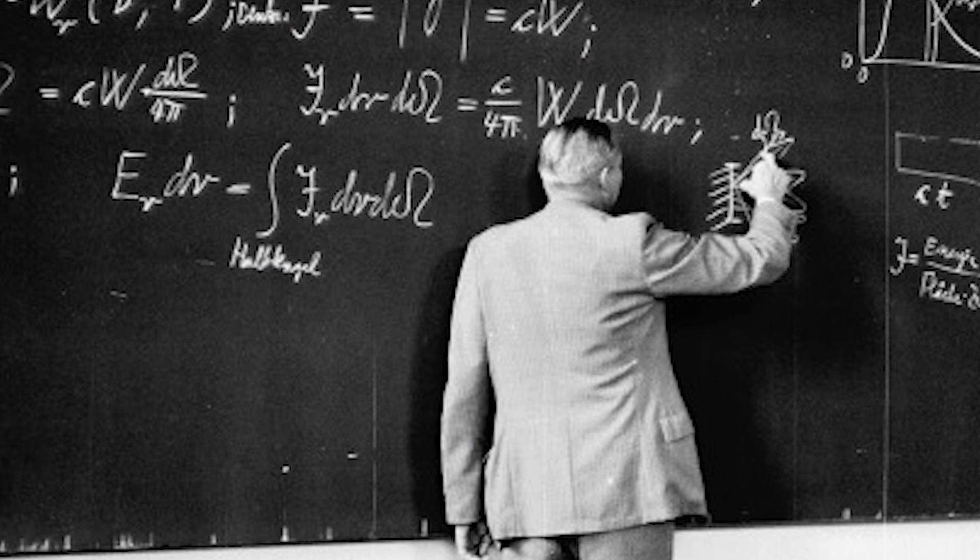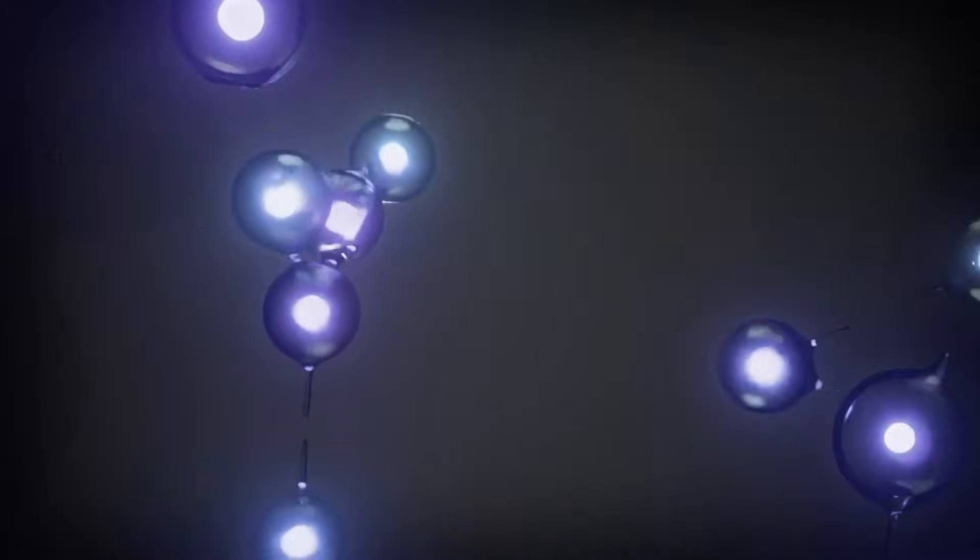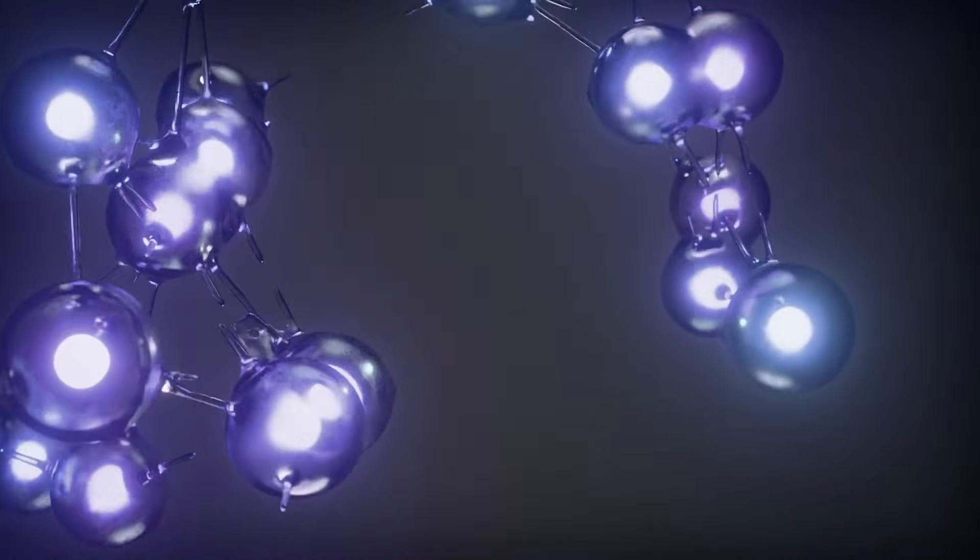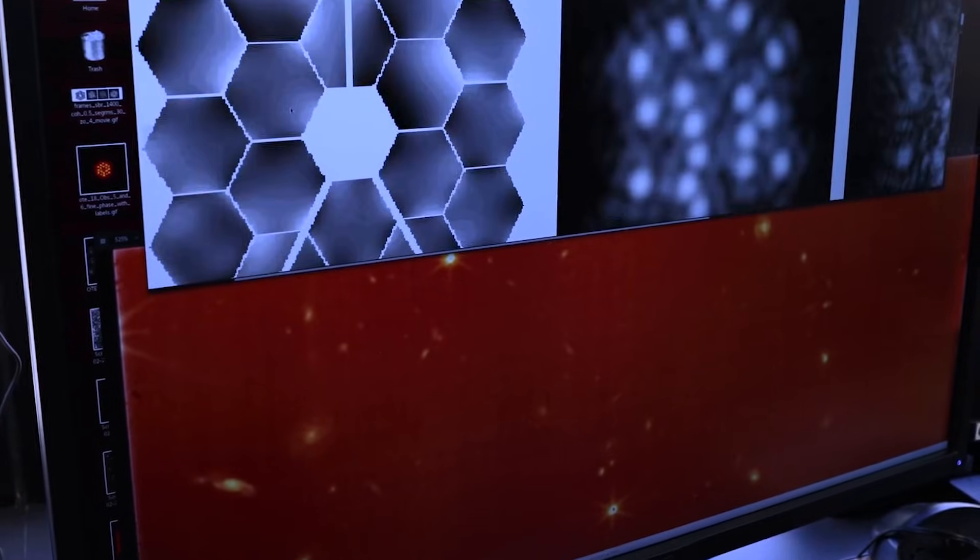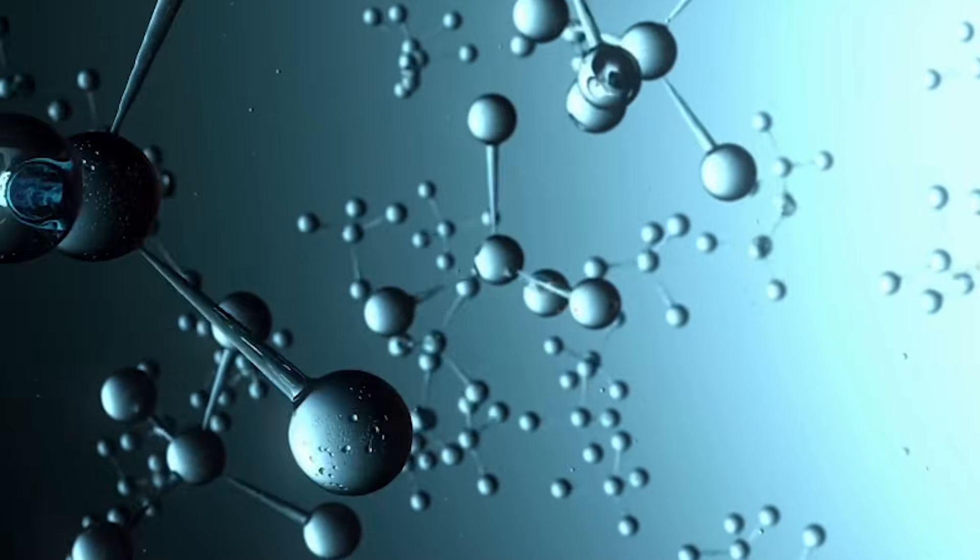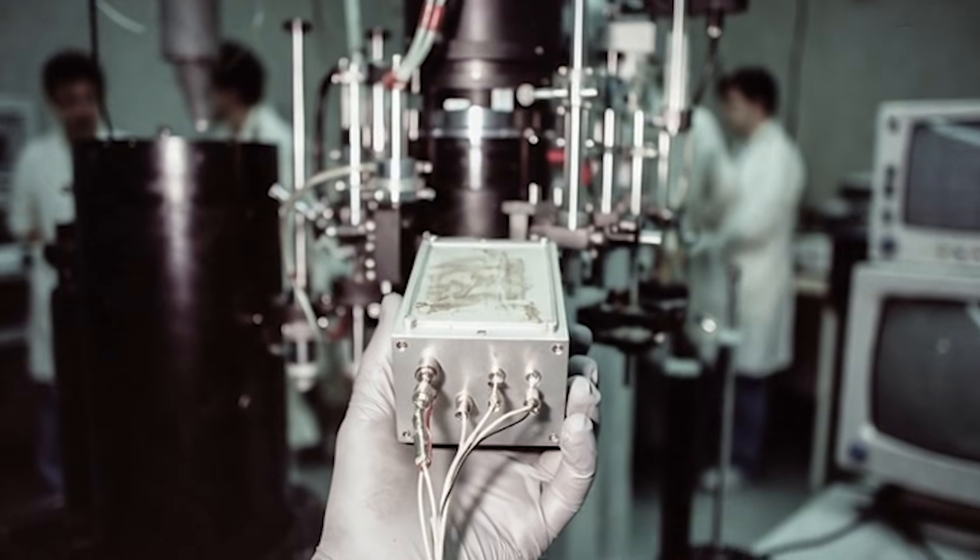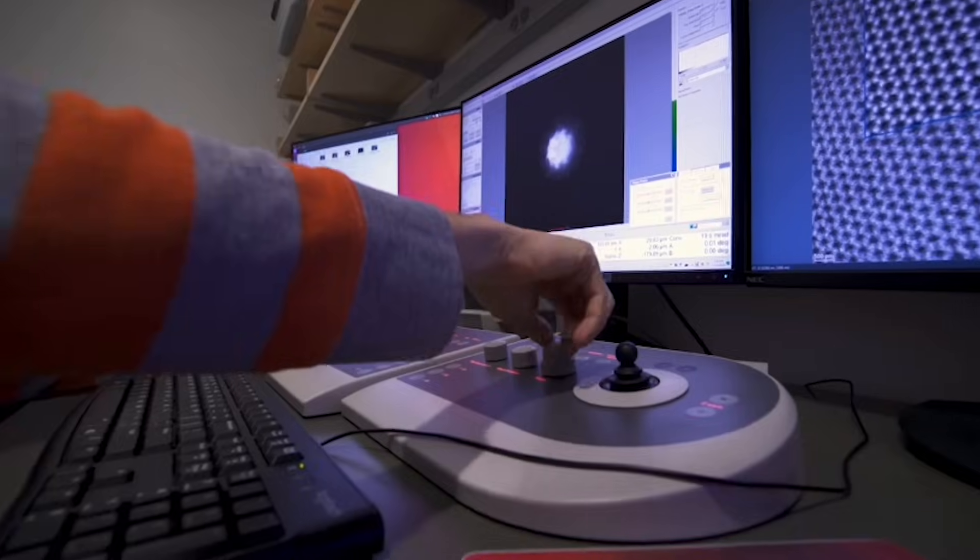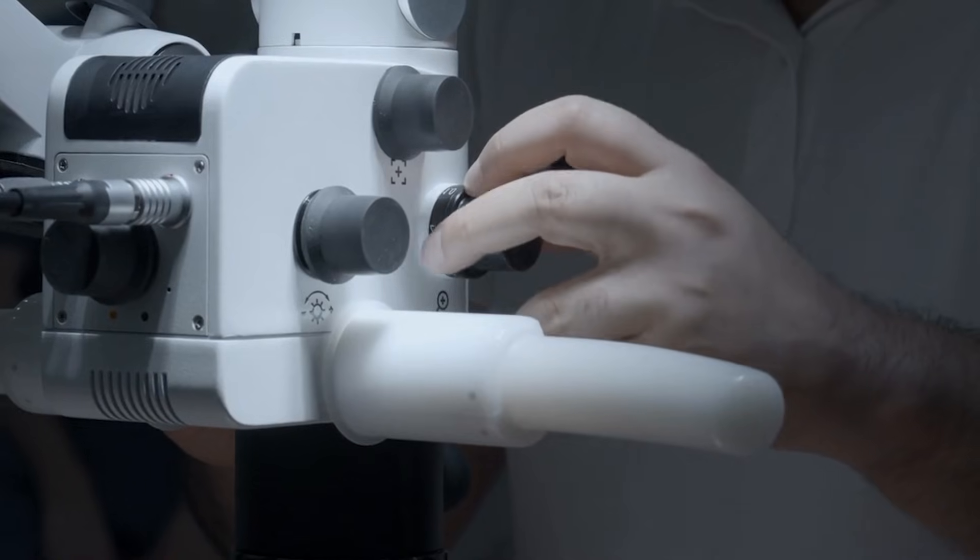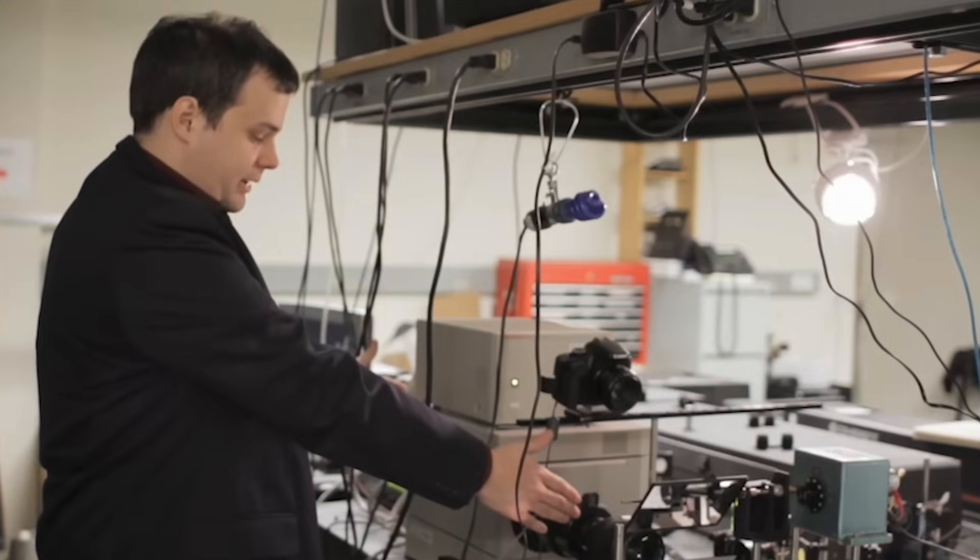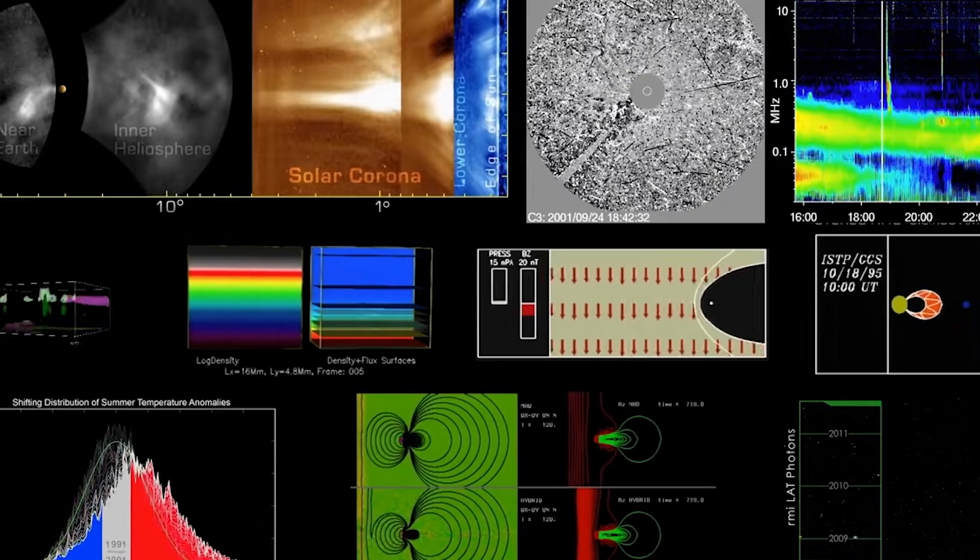The journey to seeing atoms was long and uncertain. It began with the limits of light, moved through the first magnetic lenses, and nearly stalled at a barrier no one knew how to cross. Yet through bold ideas and steady work, scientists finally broke that barrier. Today, atomic imaging guides research in every field that depends on materials. It shows us how structure shapes behavior at the smallest scales. This achievement reminds us that progress comes from refusing to accept limits, even when they seem absolute. The next discovery may already be forming, waiting for someone brave enough to look closer.